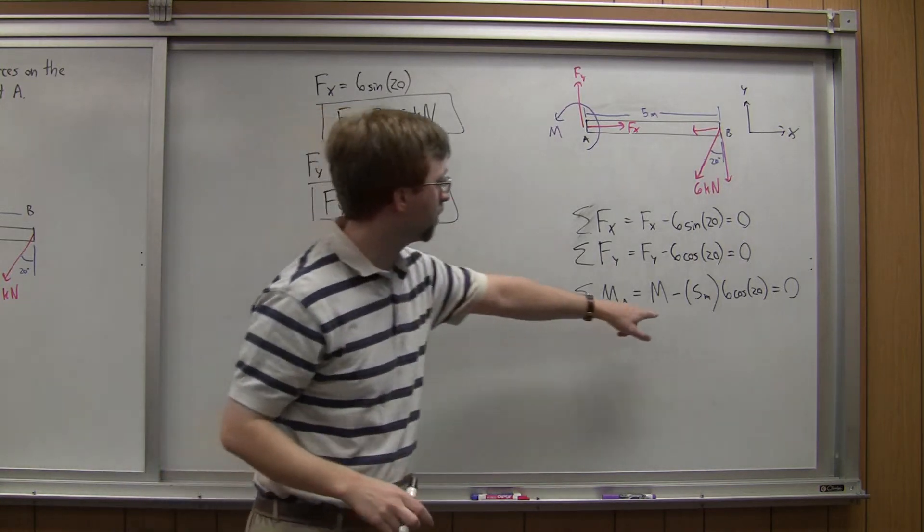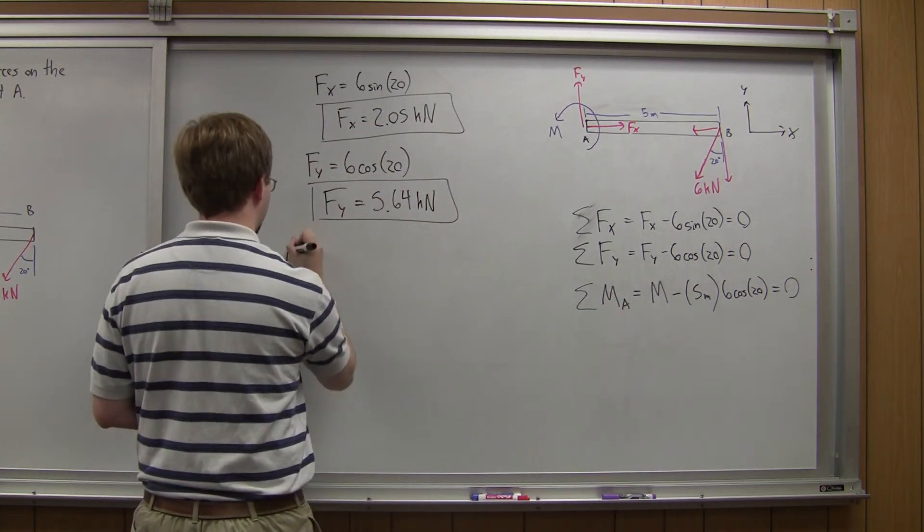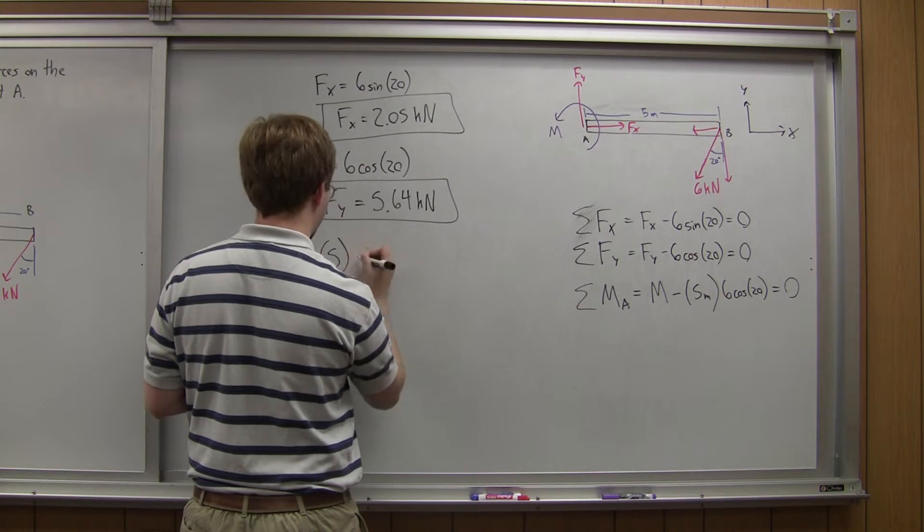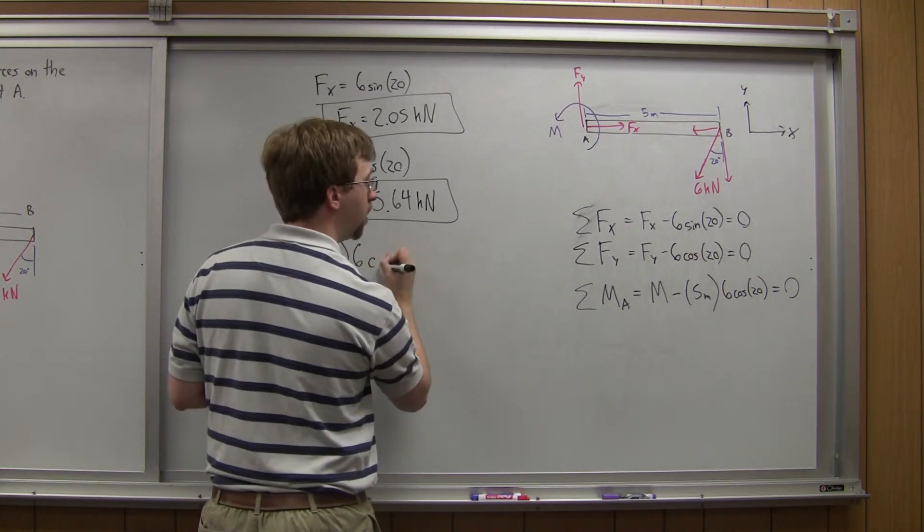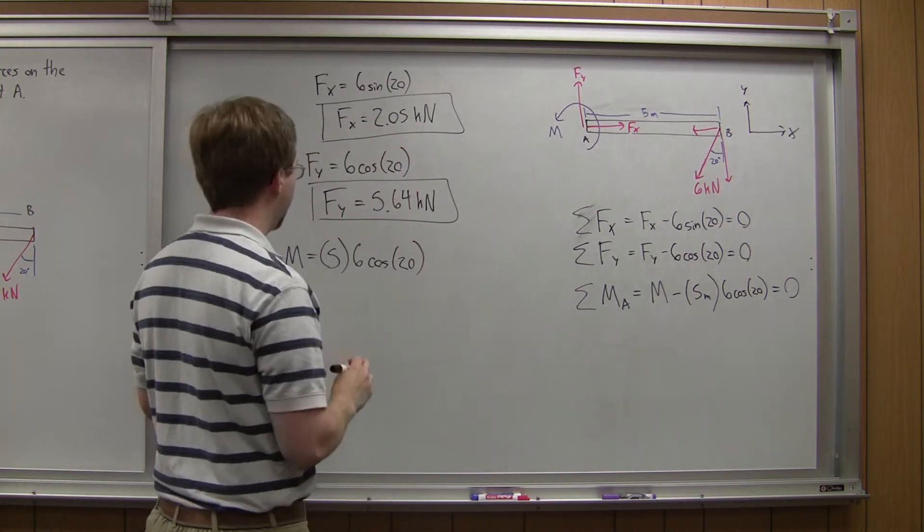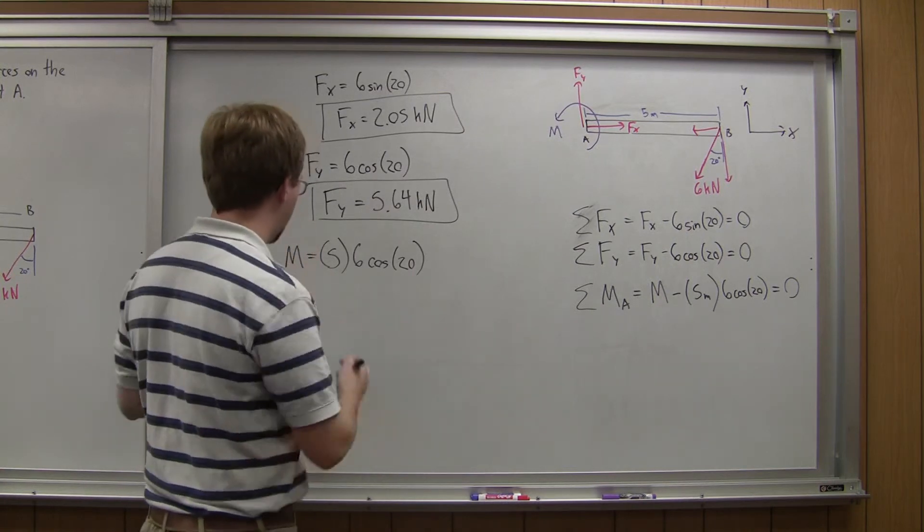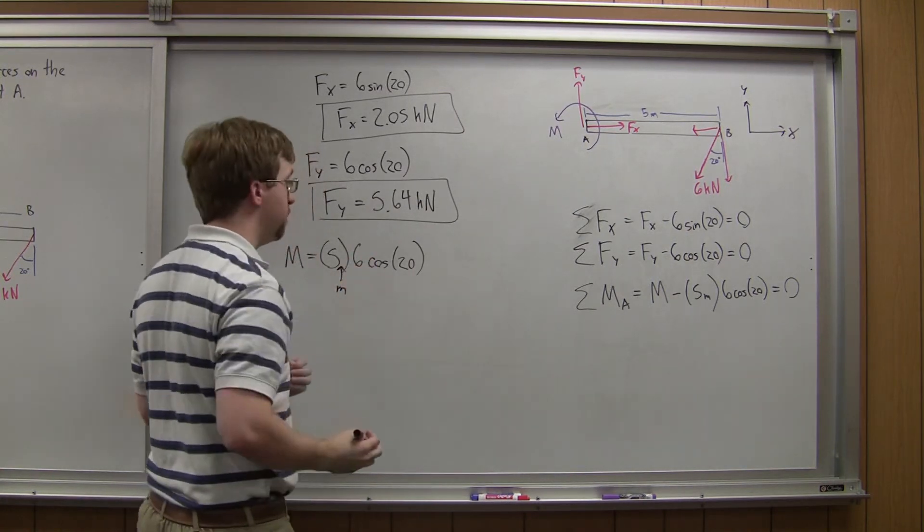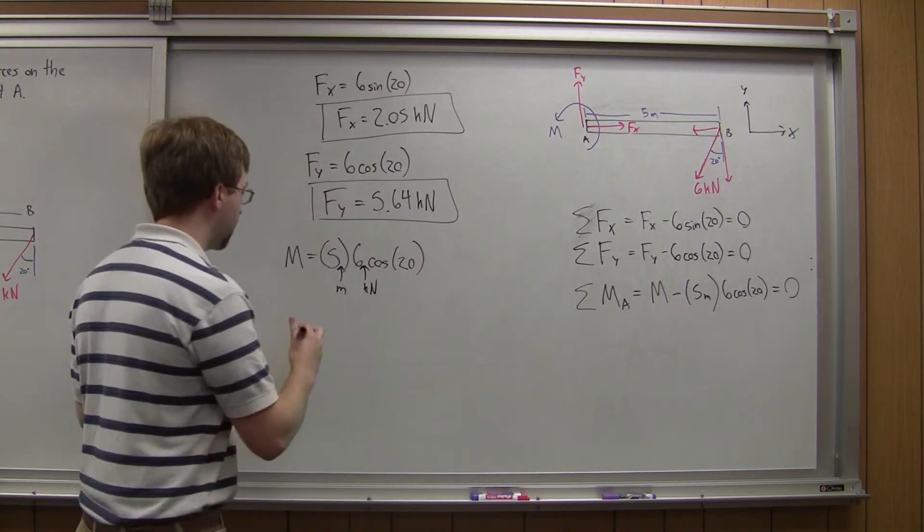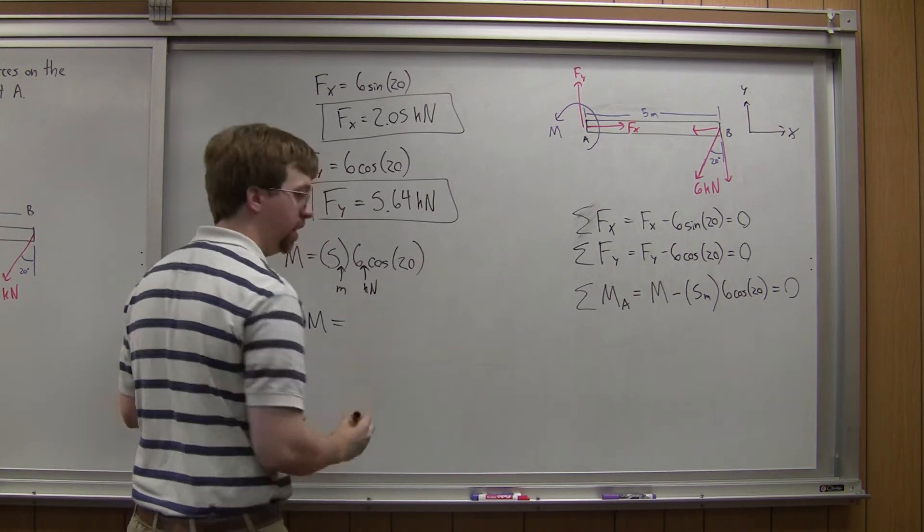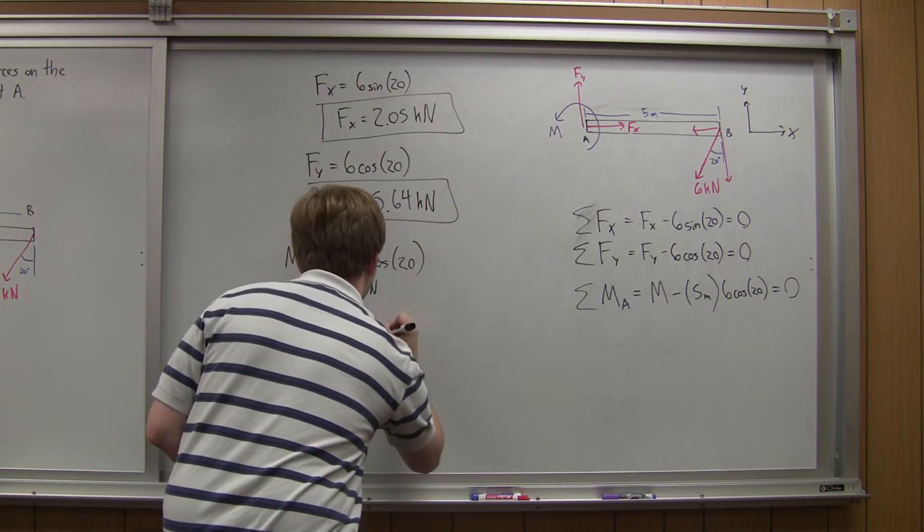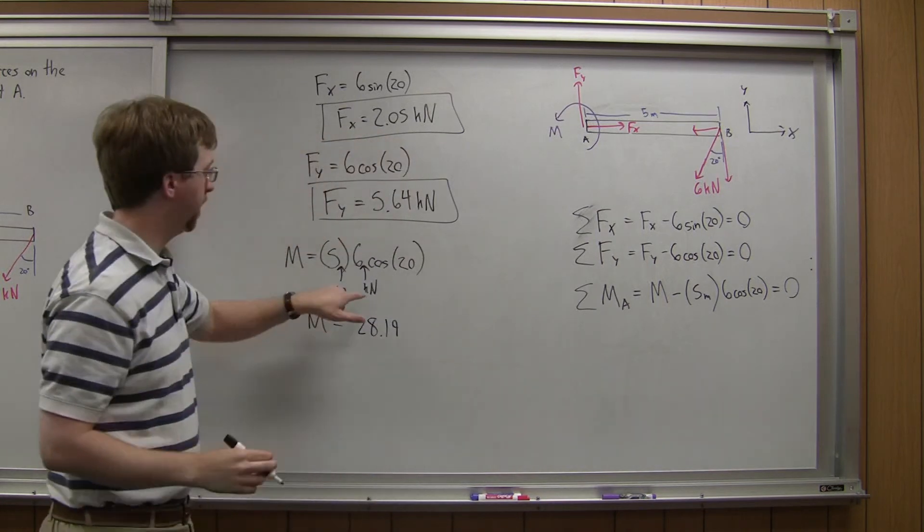And then finally, I need to solve for this moment here. M is going to be equal to 5 times 6 cosine of 20. I need to be careful with units in this case. This is 5 meters, and this 6 is 6 kilonewtons. If I solve this out, I get M is going to be equal to 28.19, and the units are going to be kilonewton meters.